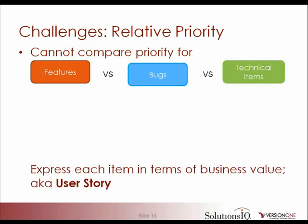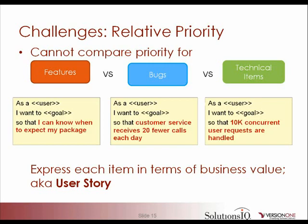If you can abstract the business value of each item into something that expresses the value the product will provide, then there is a way to prioritize these different perspectives into a single product backlog. That mechanism is called a user story — a user story represents a thin slice of vertical functionality that has business value to your end users. For example, a feature allows you to know when to expect your package, a bug allows customer service to receive 20 fewer calls, and a technical item handling 10,000 concurrent user requests allows your software to be scalable across multiple domains.